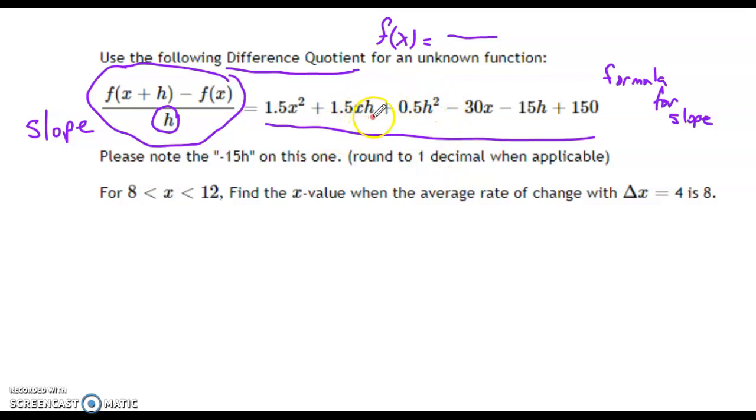So we got x's and h's in this. X is the beginning x value. That's where we're talking about if we're looking at a graph, where we're on the graph. h is the interval size. So interval. That's the distance between the two x values when we're making the slope formula.